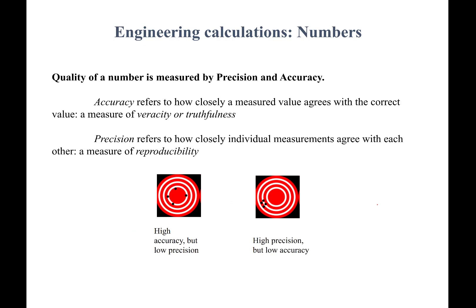The quality of a number is measured by two things: precision and accuracy. Accuracy tells you how closely a measured value agrees with the correct value — it's a measure of truthfulness. Precision tells you how closely individual measurements agree with each other — it's a measure of reproducibility. Something could have high precision but low accuracy, or high accuracy but low precision.